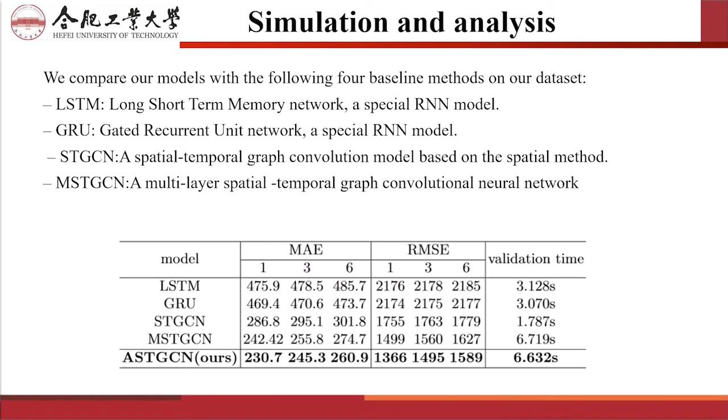We compared our module with the following four baseline methods on all datasets. We respectively evaluate the next 1, 3, and 6 prediction sequences. Root mean square error and mean absolute error are used as evaluation metrics. At the same time, we also enumerate the validation time of each module to indicate the time consumed by different modules when they are used. The results show that our improved EST-GCN module has better prediction accuracy for communication load.